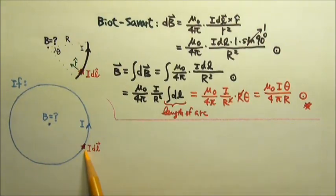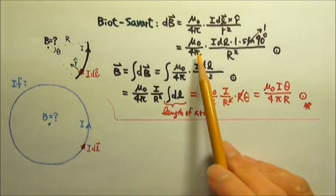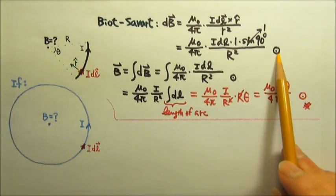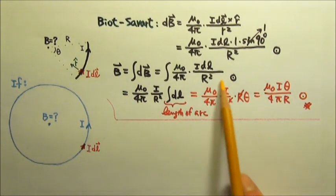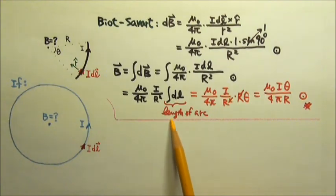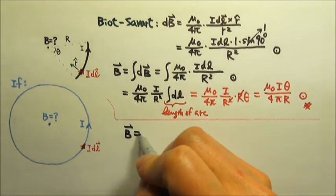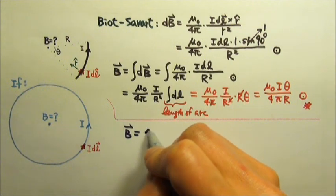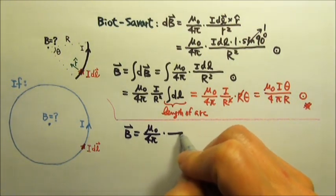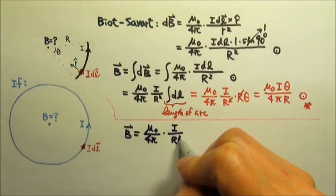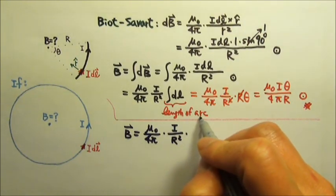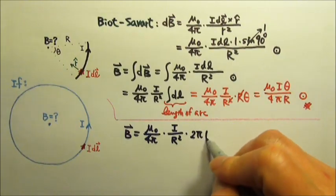In this case, we can still use the same I dL. And the magnetic field over there produced by this point current segment is still the same dB, same direction. So the only thing that's changing over here is the length of the arc. Now the length of the arc is the length of the circumference. So the magnetic field equals mu naught over 4π times I over R squared. The length of the arc, the circumference will be 2π R.